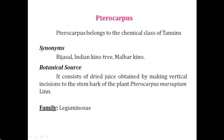Pterocarpus belongs to the chemical class of tannins. In your syllabus, there are two drugs that belong to the category of tannins: catechu and pterocarpus. Today we are discussing pterocarpus. The synonyms of pterocarpus are Bijasal, Indian Kino tree, and Malabar Kino. The word 'Kino' is a chemical constant, and the chemical constant is Kinoin or Kinotanic Acid.